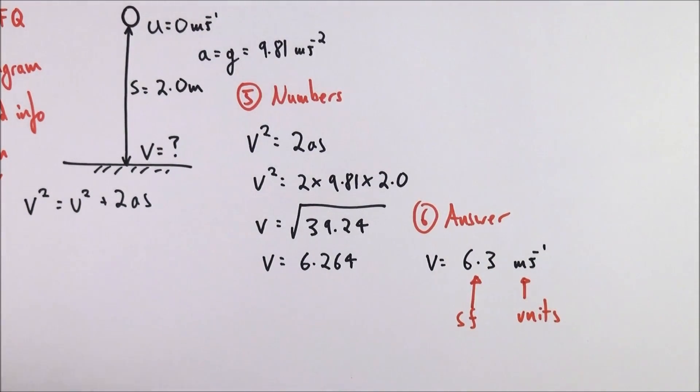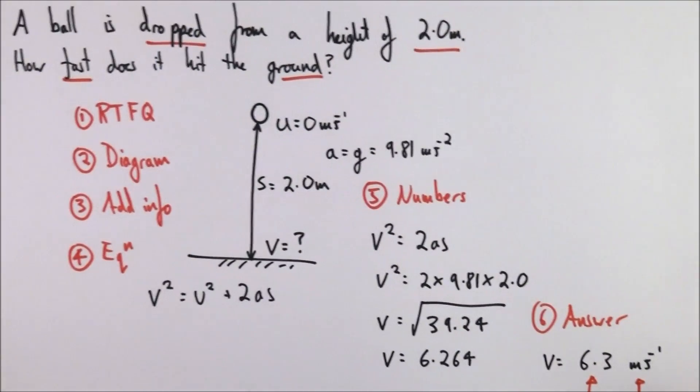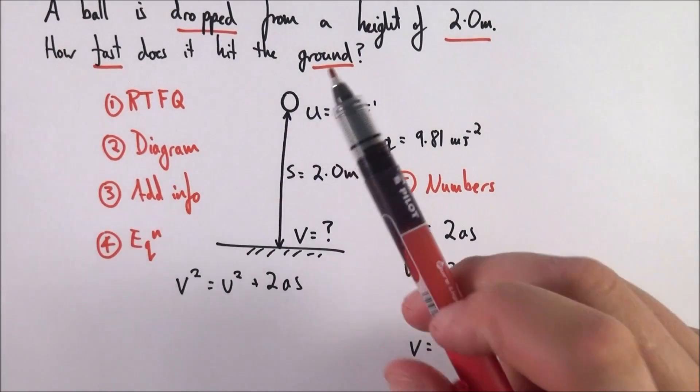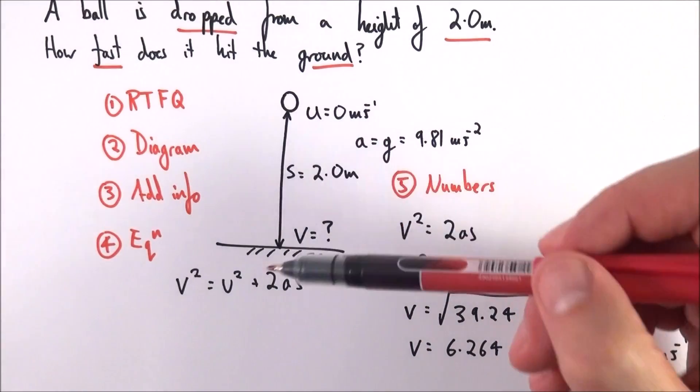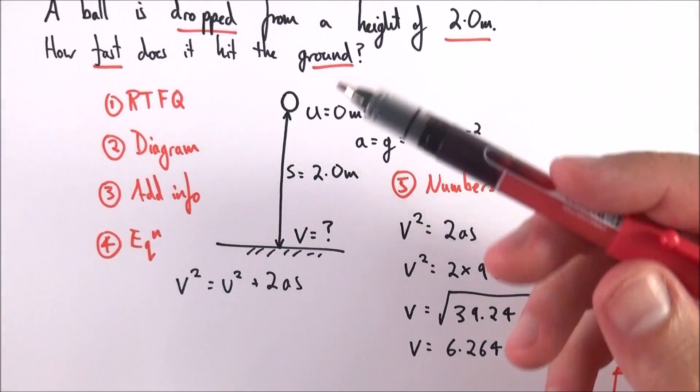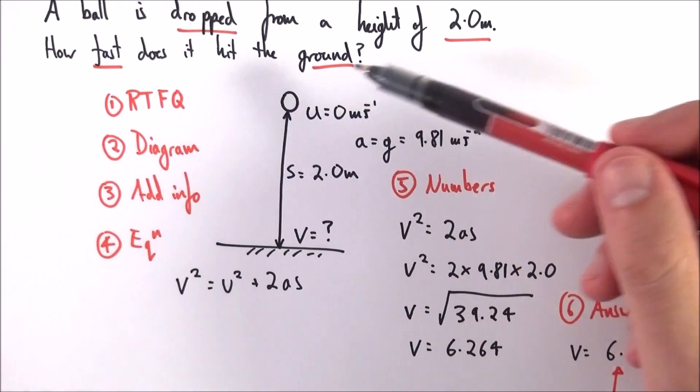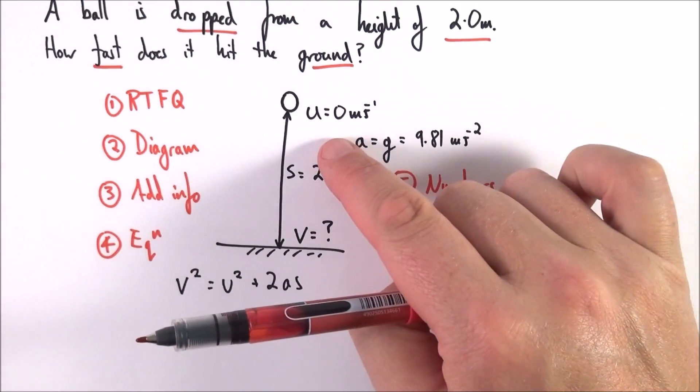That's pretty much it. When you have a question, if you can go through the process of reading it properly, draw a diagram that allows you to order your thoughts and work out what's important, then you add information onto your diagram. As long as you understand it, that's the important thing.